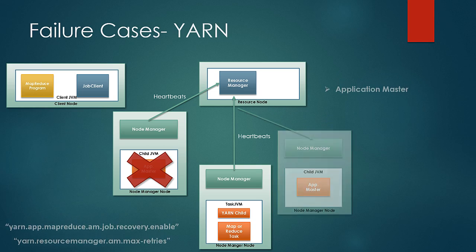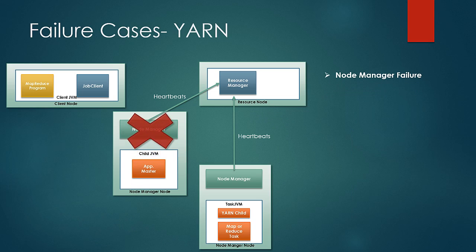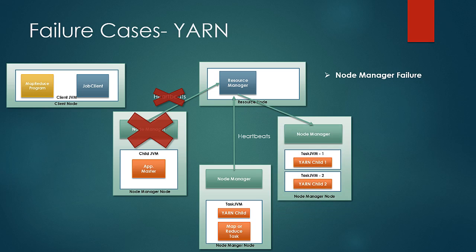Next, we look at the case where a Node Manager fails. If the Node Manager fails, it stops sending heartbeats to the Resource Manager. The Resource Manager waits for a while, considering the case that it might have slowed down. If no heartbeat is received for a certain period of time, it assumes the Node Manager has crashed. If an Application Master was running under the failed Node Manager, the steps described in Application Master failures are followed and all remaining tasks are respawned on a new Node Manager. If tasks under a specific Node Manager fail often and cross a threshold, the node is taken off from the available pool and blacklisted. Blacklisting is a process to track poorly performing nodes, and this procedure is the same as discussed for task trackers in Classic MapReduce.